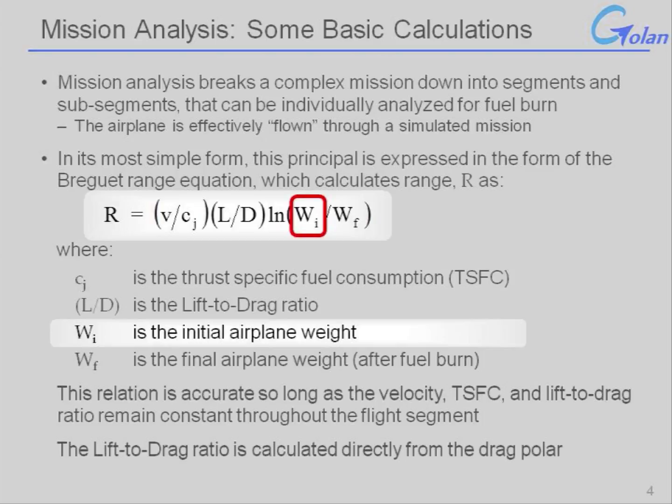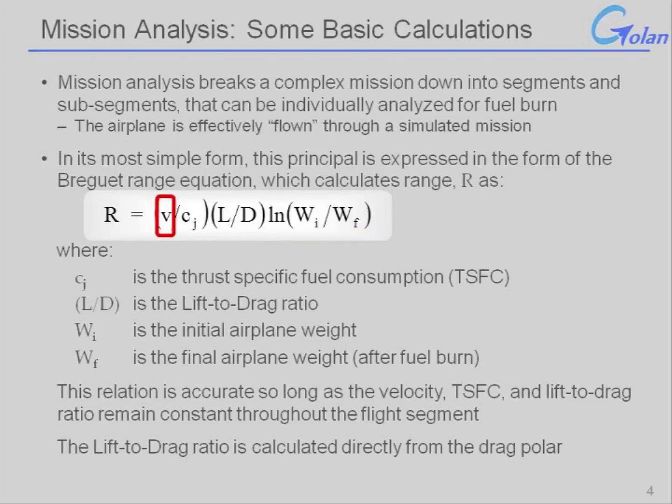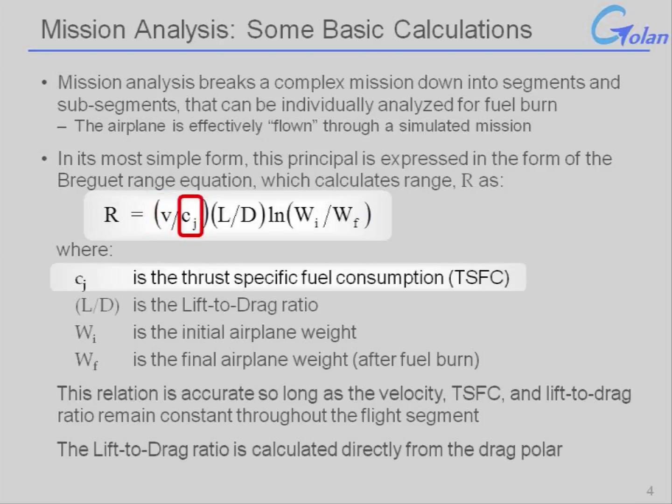The range equation relates the initial airplane weight, which is the weight at the beginning of the cruise segment, to a final airplane weight, which would be the weight after the cruise segment, in a logarithmic fashion, which means that this is a very non-linear relationship. We can see that we can also affect range by the velocity of the aircraft. As velocity goes up, as you have a higher cruise speed, assuming everything else stays constant, if you could somehow push up the cruise speed a little bit, you could increase the range of the aircraft. Similarly, we see that range is inversely proportional to the thrust-specific fuel consumption. This is logical. If I have lower fuel consumption, I should get better range.